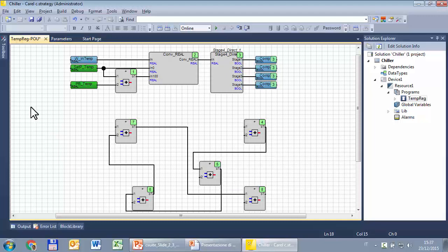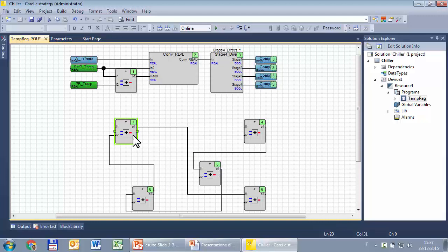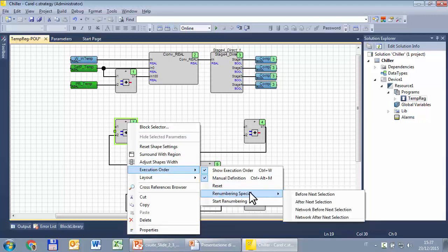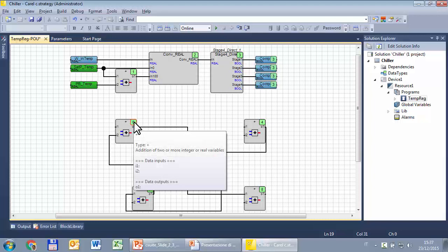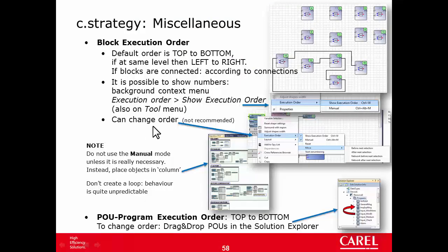Well, it is possible to change or to force a given sequence. For example, if I wanted to execute this block after this one, I can select it, right click, execution order, renumbering special, after next selection, so after this. So this is number 6 and after there is that one. So it is possible to change the order, but in any case it is not recommended. It is better to use the default order.